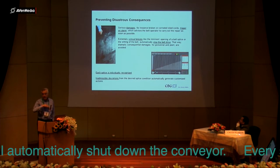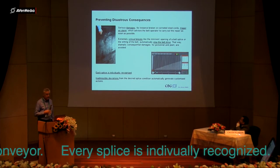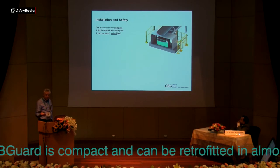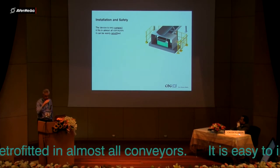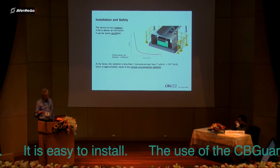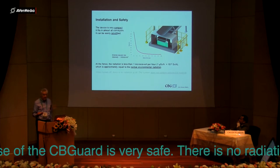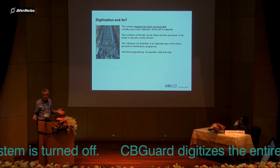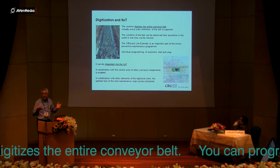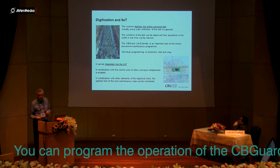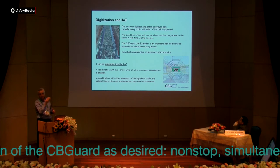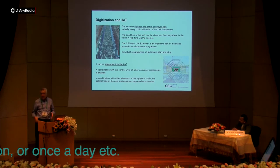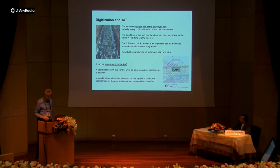Every splice in a conveyor belt — and long overland conveyors can have dozens of them — is individually recognized. The device is very compact and can be retrofitted into any system; you just need a concrete foundation, some protection, and a fence. Regarding X-ray safety, when the system is turned off there is no radiation at all. You can start and stop the system whenever you want — running it continuously with the conveyor, daily, monthly, or any other schedule. It is completely flexible.